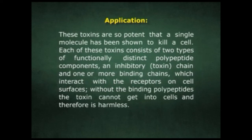These toxins are so potent that a single molecule has been shown to kill a cell. Each of these toxins consists of two types of functionally distinct polypeptide components: an inhibitory toxin chain and one or more binding chains, which interact with receptors on the cell surface. Without the binding of polypeptides, the toxin cannot get into the cells and therefore is harmless.